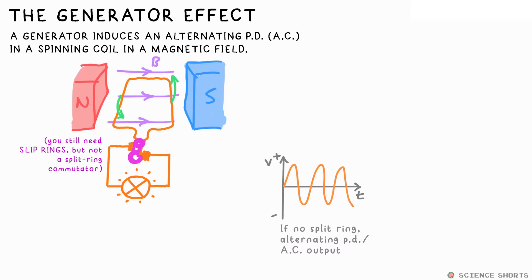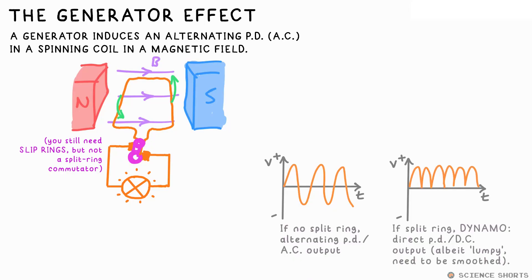If you do add a split ring commutator, it just gets rid of the alternating part of the current, so we've now got DC coming out of it instead. Lumpy DC, but DC nevertheless. Technically, this is now a dynamo.